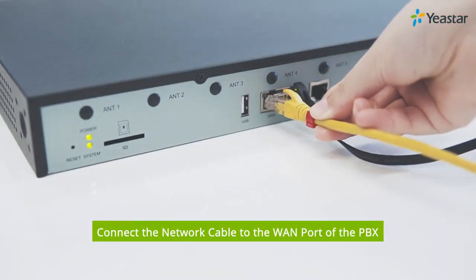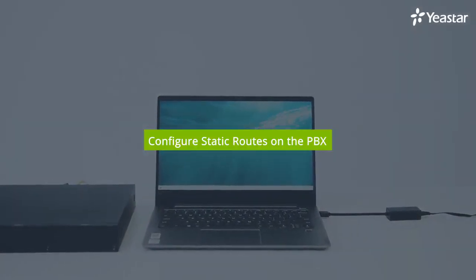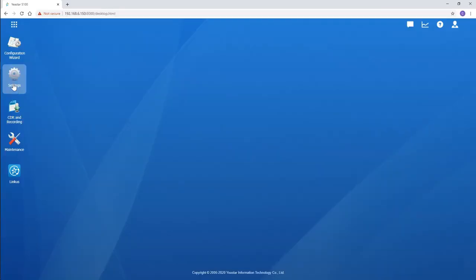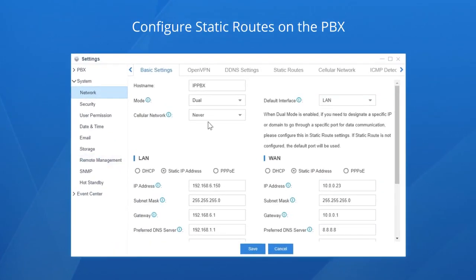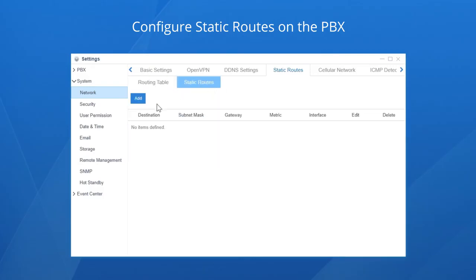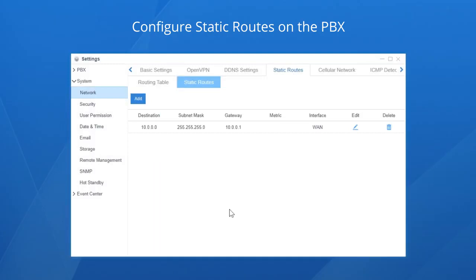Simultaneously, connect the network cable to the WAN port of the PBX. Besides, we'll need some extra work to configure static routes so both the LAN port and the WAN port will work in order. Log in again and go to the network setting part. Find the static routes — all the rules for the LAN port will work because it is the default port. What we need is to create a rule for the WAN port. Choose static routes and click add. Fill in the information according to the details provided by the service provider, then choose the WAN port. Save and apply the configurations. The new rule has been added to the routing table, and now both ports will work normally.